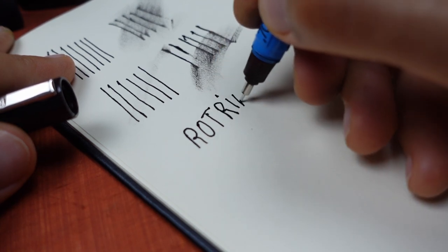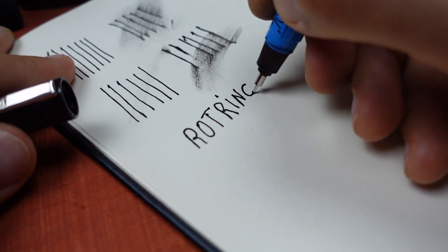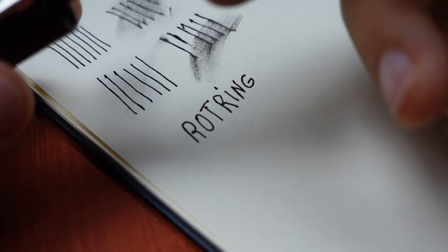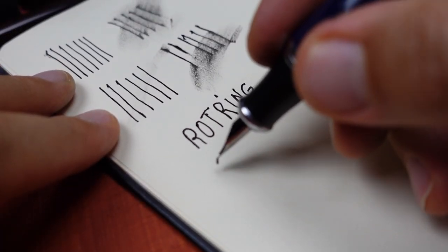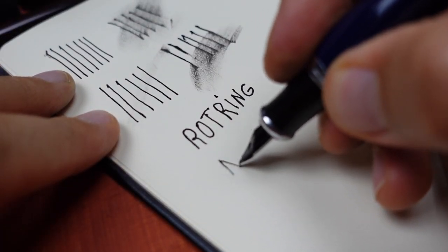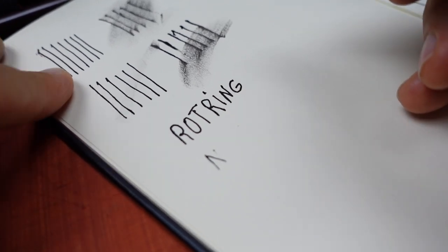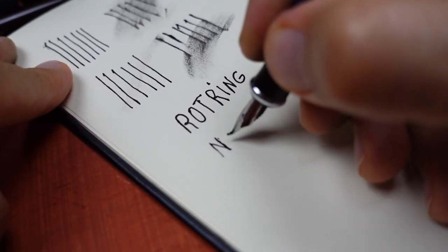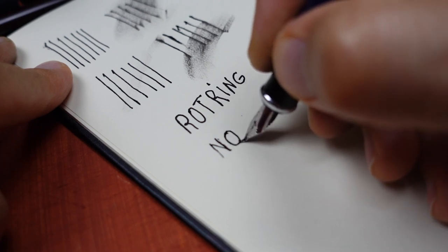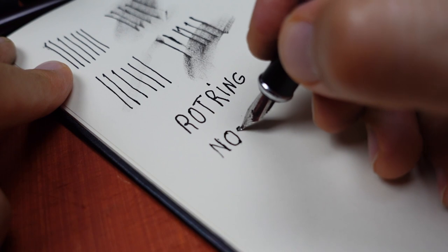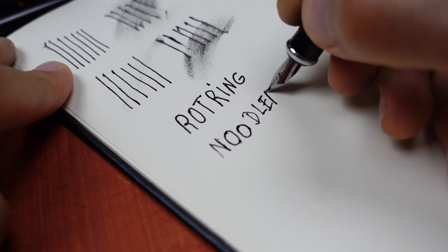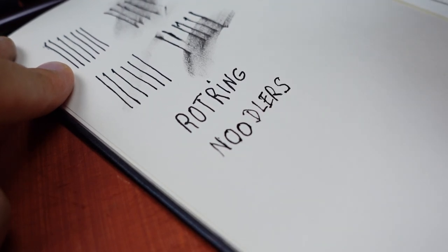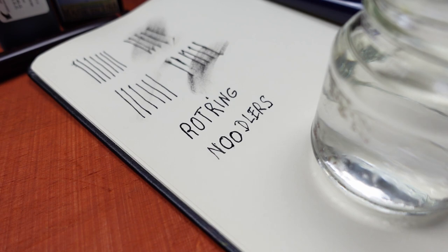And then I'll wait until it dries. This is Rotring. Now, let's write with Noodler's. This is the fine point. And it doesn't write so well. So, I'm trying with the bent nib Noodler's. And let's wait until they dry. Let's see what happens after 5 minutes.